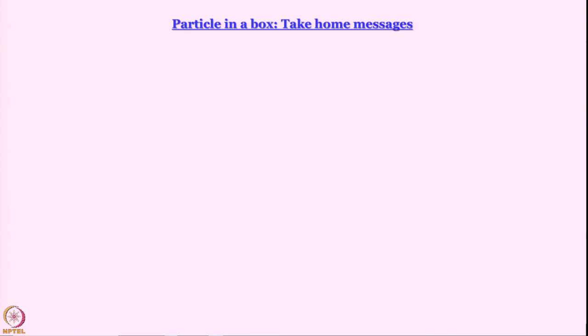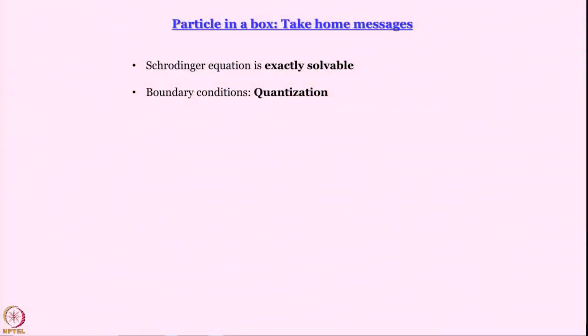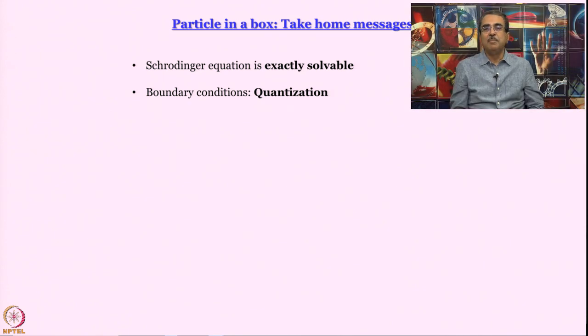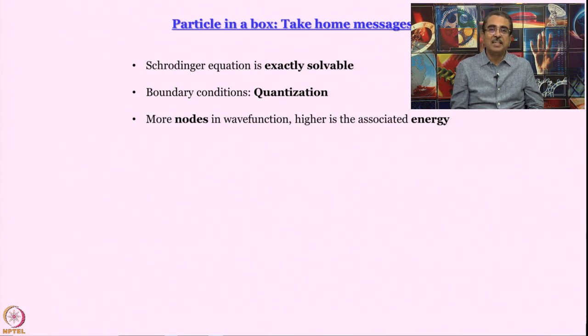In our discussion of particle in a box, what have we learnt? First, we have encountered a situation where Schrodinger equation is exactly solvable. Free particle is less satisfying because you get a wave function that is not all that great. In particle in a box, you get a wave function that is better. What is more important? For the first time in our discussion, we arrive at quantization that arises automatically from application of boundary conditions. So we learned that boundary conditions lead to quantization.